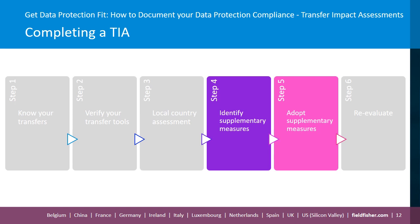To draw out a few examples, contractual measures can include placing obligations on your importer — for example, requiring them to provide or publish information relating to the frequency and type of access requests received from public authorities. On the organisational side, this includes scrutinising the data handling processes of your importer to ensure sufficient policies and procedures are in place.